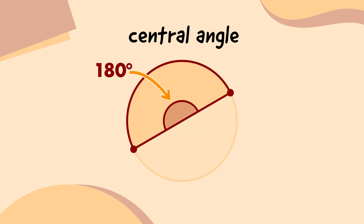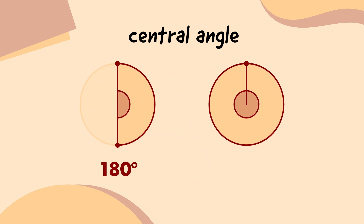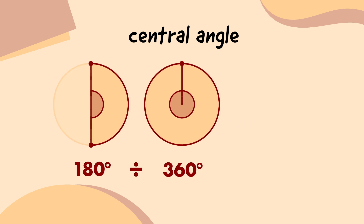What do we do next? Well, the central angle of a complete circle is 360 degrees. And we can tell how big part of a circle is by comparing how big its central angle is to that of a complete circle. To do that, we need to divide 180 by 360, which gives us 0.5. That's exactly one half.